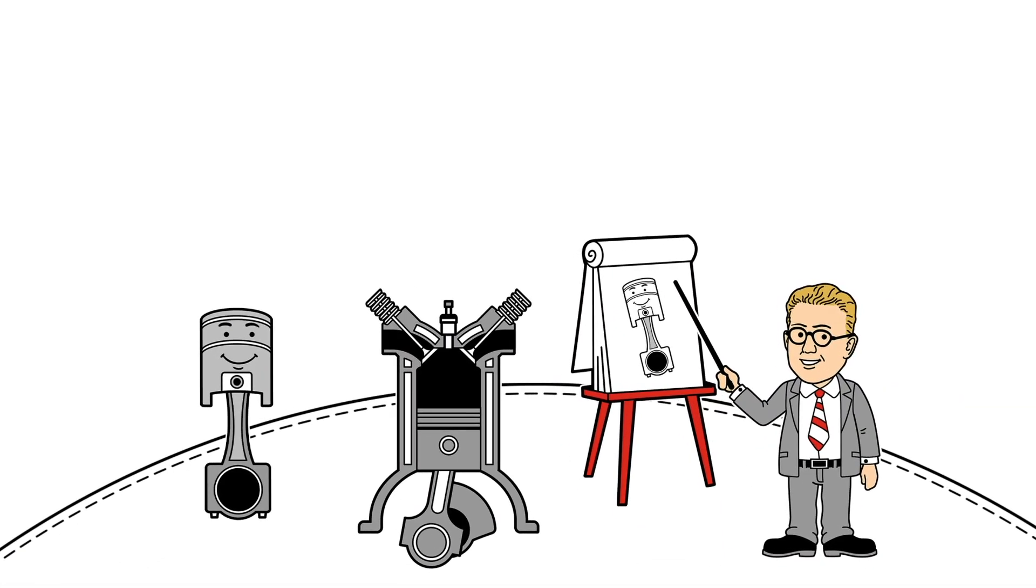A piston moves up and down within the power cylinder of a combustion engine and is one of the main components that transfers energy from combustion and converts it to linear motion. We will learn about the rest of Pete's friends that help in this process later.